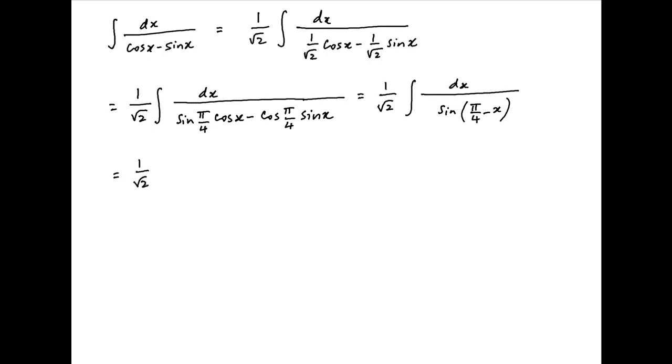Therefore the given integral is equal to 1 upon root 2 integral cosec pi upon 4 minus x dx. Now cosec pi upon 4 minus x can be written as cosec of pi minus pi upon 4 minus x.